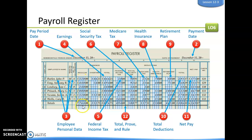The last step is to total, prove, and rule the register. We add up each column — regular pay, overtime pay, and total earnings for all employees — along with all deductions. Net pay should equal total earnings minus total deductions. Check numbers are issued for each employee, and once management approves payroll, checks are cut or directly deposited.